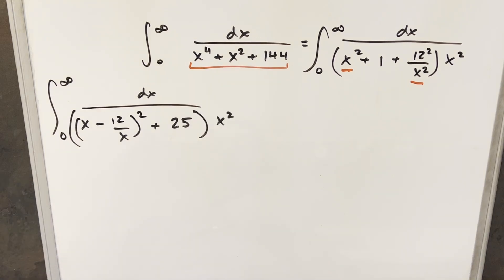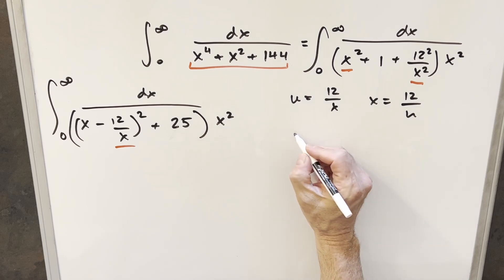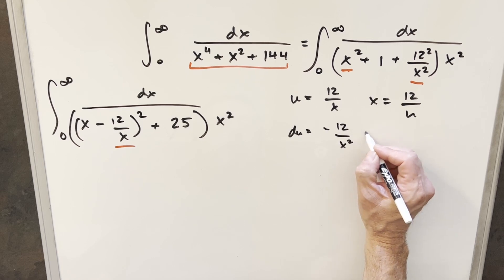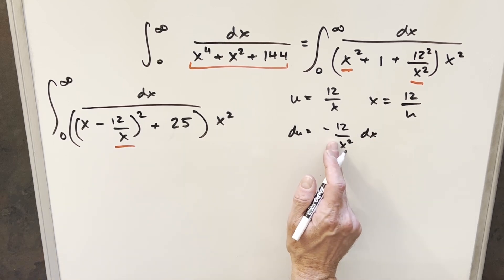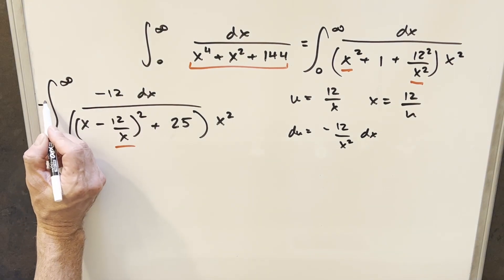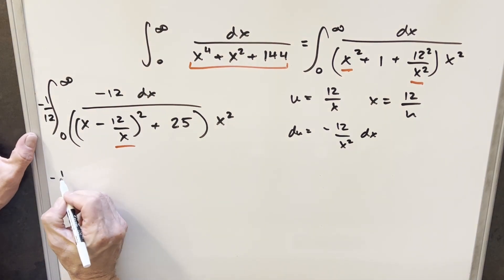Now I want to do a u substitution. We've done similar things before where we used u as 1 over x. The slight difference here is we're going to make u equal to 12 over x, just to account for that term. So u equals 12 over x. Taking the derivative, du is going to be minus 12 over x squared dx. We have our x squared right there, so I want to create that minus 12 in the numerator. I'll write a minus 1 over 12 in there and then make the substitution.